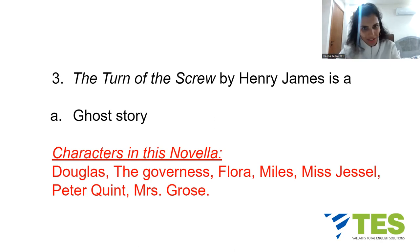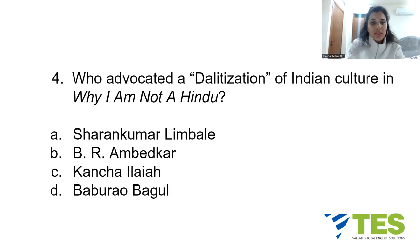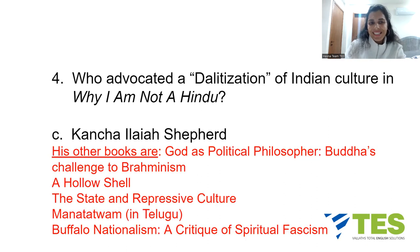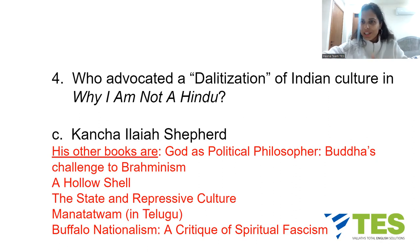Question number four is from Indian Dalit literature: who advocated a Dalitization of Indian culture in 'Why I Am Not a Hindu'? Your options are: A. Sharan Kumar Limbale, B. B.R. Ambedkar, C. Kancha Ilaiah, or D. Babu Rao Bagul. The answer is C, Kancha Ilaiah Shepherd — born 1952, an Indian writer and Dalit rights activist. He himself is not a Dalit but works for their rights. He lives in Telangana; his father was a shepherd, which is why he took the suffix Shepherd in his name.